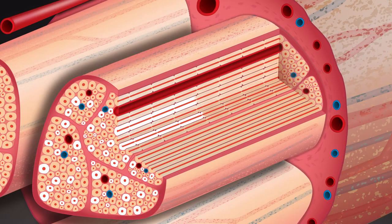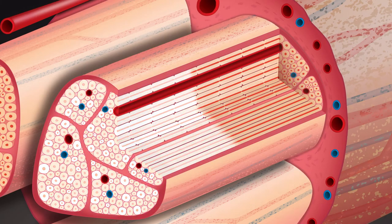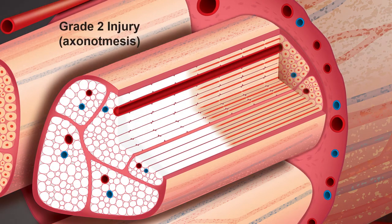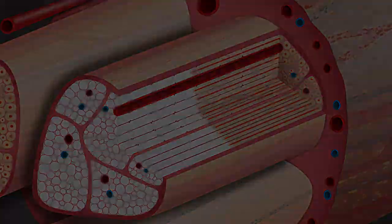In a grade two injury, conduction loss occurs at the level of injury and distal nerve segment. Axonal continuity is lost and Wallerian degeneration occurs, while endoneurial tubes and all connective tissue infrastructure are still preserved. For recovery to occur, axonal regeneration is needed with precise orientation of the growing fibers. Since endoneurial tubes are preserved, correct targets will be re-innervated.